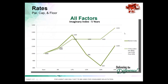When you put all elements together — par rate, cap rate, and floor rate — you have to have a little give and take. You can't just have a floor with unlimited upside and no cap; there has to be a way to pay for it. We'll get into the ways to pay for it in the next session. You have to have at least some other element that limits it.